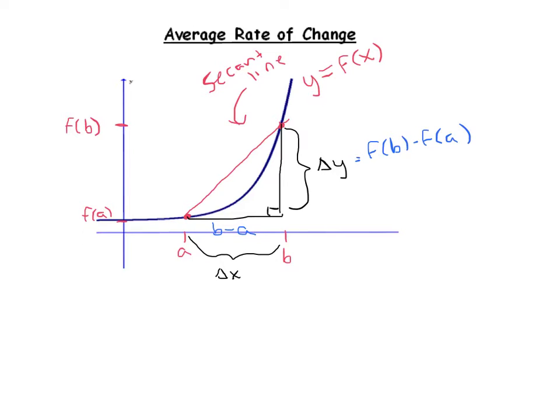The slope of this secant line is what we mean by the average rate of change. In a previous video, we used the context of traveling from Boston to New York — it took 3 hours to go 300 miles, so your average rate of change is 300 divided by 3, which is 100. When you do that calculation, you're calculating a slope — specifically the slope of a secant line.